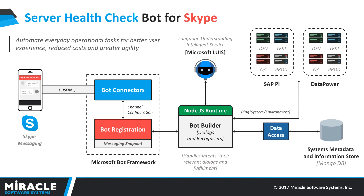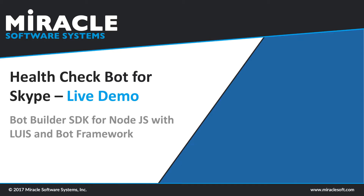Every system has multiple environments, and each environment has its own address stored within this data store. Every time the user asks for an environment and the final processing step comes, the Node.js runtime pulls that data, runs the health check, and responds to the user with whether the system is reachable or not reachable, and if reachable, what the average response time is. Now let's look at the actual demo.